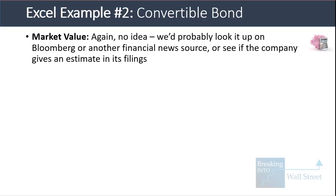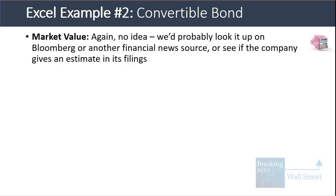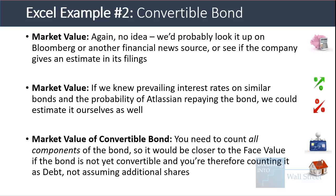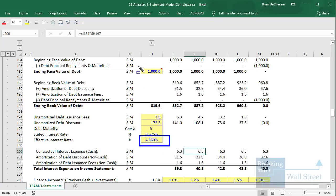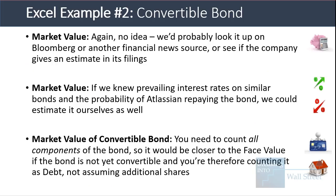For market value, again, we'd need to look it up on Bloomberg or check company filings because we don't know how 0.65% and 4.5–4.6% compare to current prevailing market interest rates. For a convertible bond used in enterprise value calculations, you need to count it as either 100% debt or 100% equity. If counting as debt, the market value would be closer to the face value — incorporating the effective interest rate — rather than just the $820 million book value, since you'd treat it as a traditional non-convertible bond.